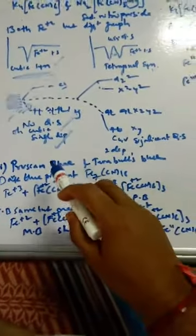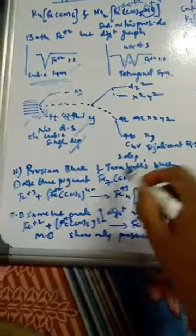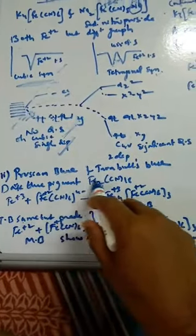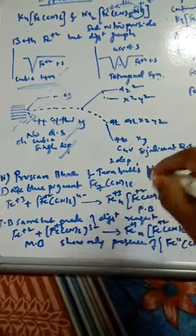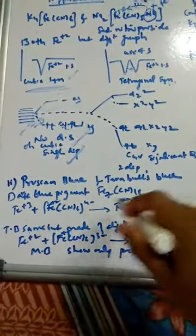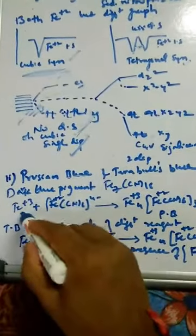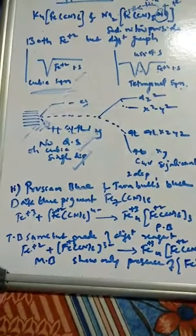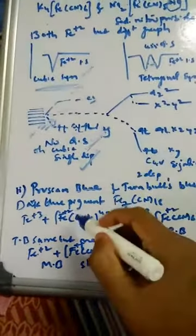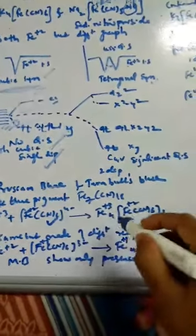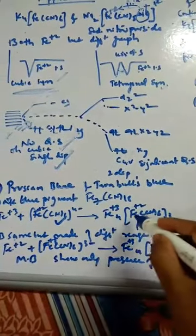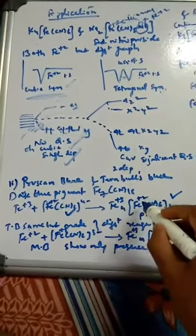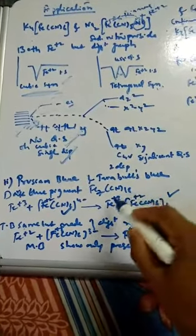Another application is distinguishing Prussian blue and Turnbull's blue. Both seem to be the same — they are dark blue pigments with the molecular formula Fe7(CN)18. Prussian blue is obtained by treating an Fe3+ salt with ferrocyanide [Fe(CN)6]4−, giving Fe4[Fe(CN)6]3 — where this outer Fe is in the +3 state and the inner Fe is in the +2 state.